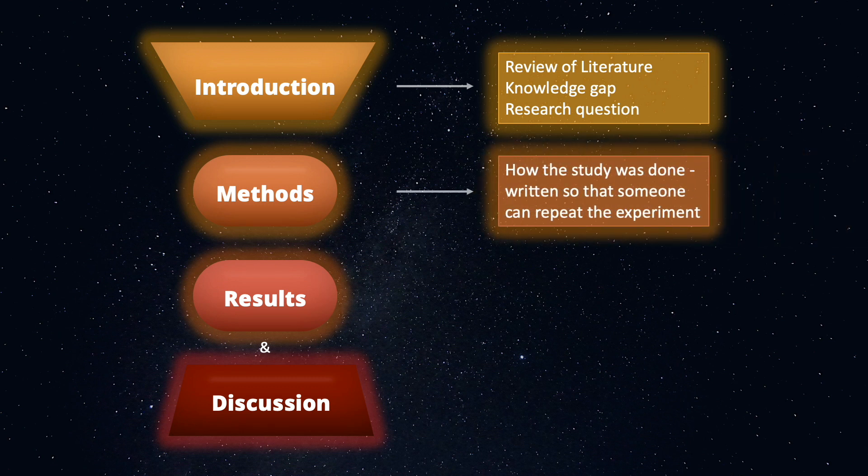In the methods section, you want to describe how the study was done and what materials were used. It should be written in such a way so that peers can repeat the experiments and validate your procedures. Repeatability is essential for meeting one of the requirements of a primary publication.